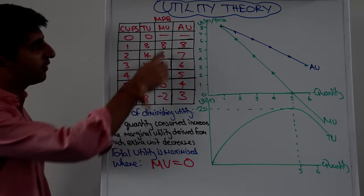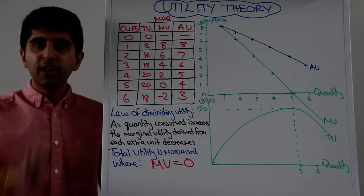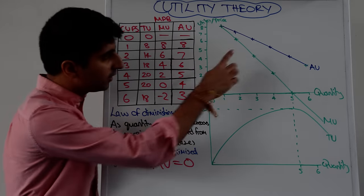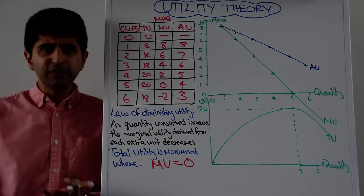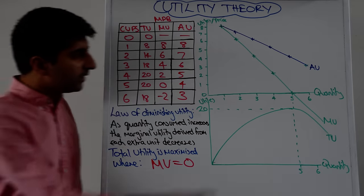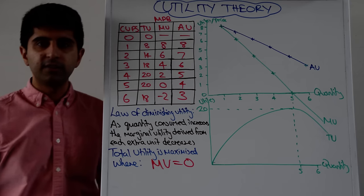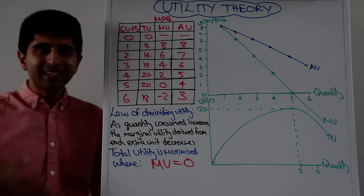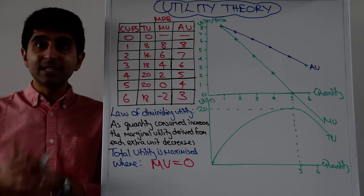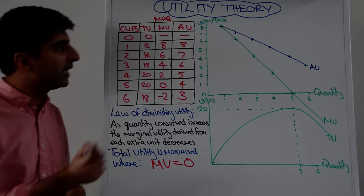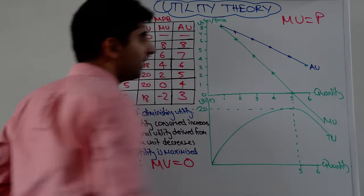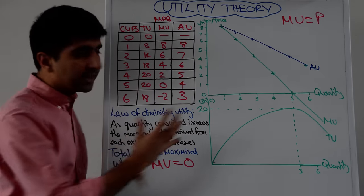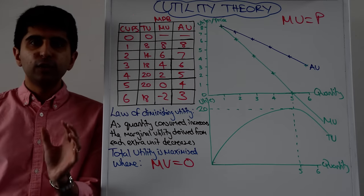Is it worth consuming the first unit? Yes, because it generates eight pounds worth of utility and they're only paying four pounds. The second unit generates six pounds worth of utility — they're only paying four pounds, so buy that one. The third unit generates four pounds worth of utility and they're paying four pounds, so it makes sense to consume that one as well. The fourth unit generates two pounds worth of utility but the consumer is paying four pounds, so it doesn't make sense. A rational consumer will maximise their utility by consuming up until marginal utility equals the price.